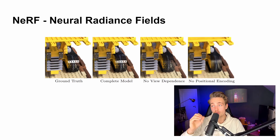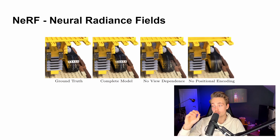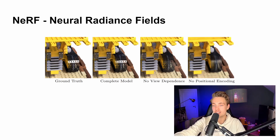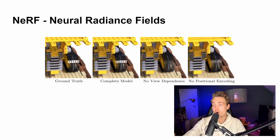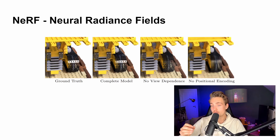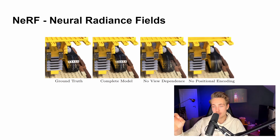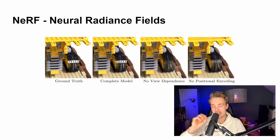Looking at the results, we compare the ground truth, the complete NERF model, a model with no view dependence, and a model with no positional encoding. The complete model achieves really high accuracy. Without view dependence, reflections are missed — for example, on a track, bars that should be black actually have a reflection visible in the ground truth, which the complete model captures but the no-view-dependence model cannot. Without positional encoding — without knowing where the pixels are in the image — we get really blurred results with poor rendering quality.